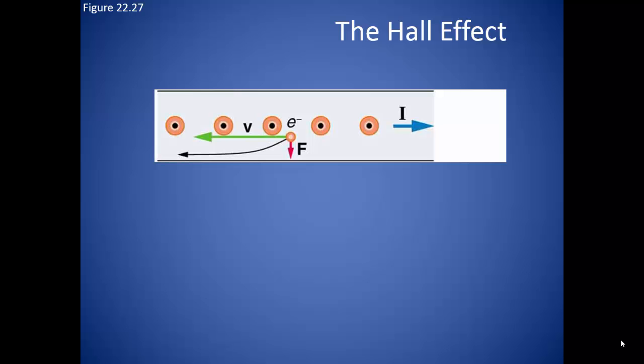The charges that are moving through the metal are all experiencing a force caused by the magnetic field, and using our right-hand rule, we can determine that they are feeling the force to the bottom. This causes the electrons to move towards the bottom of the wire.